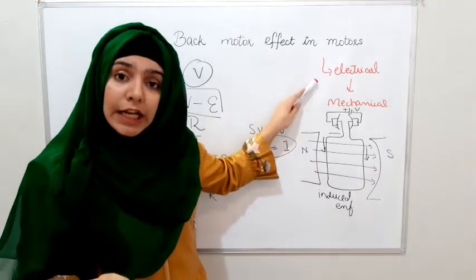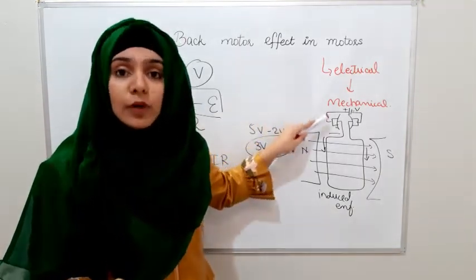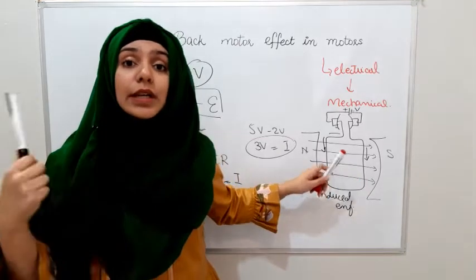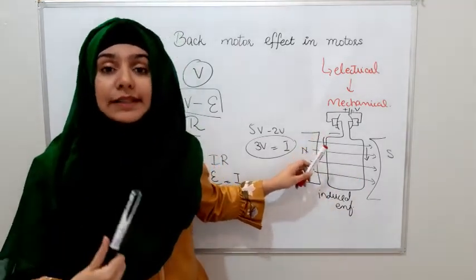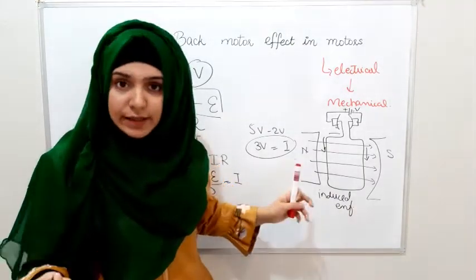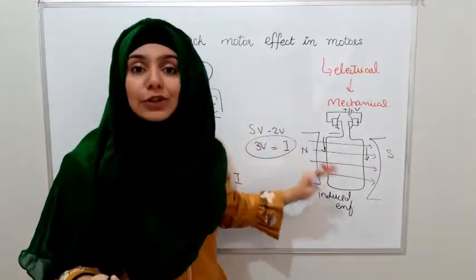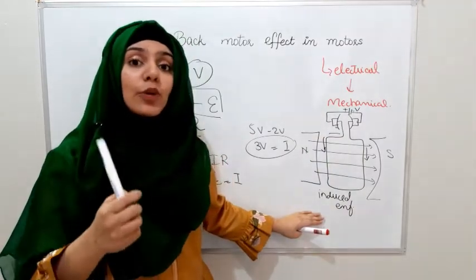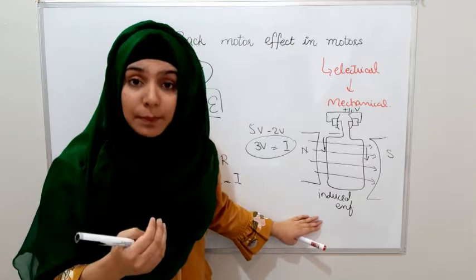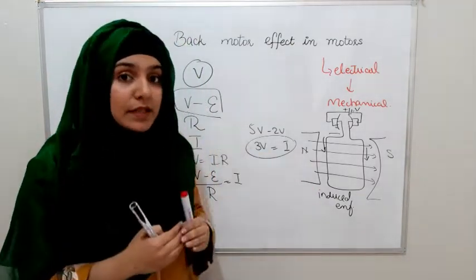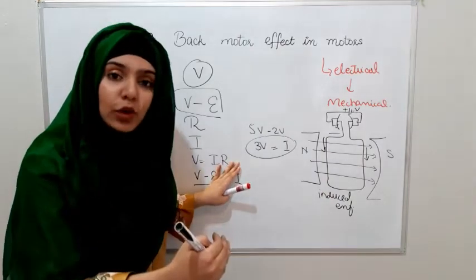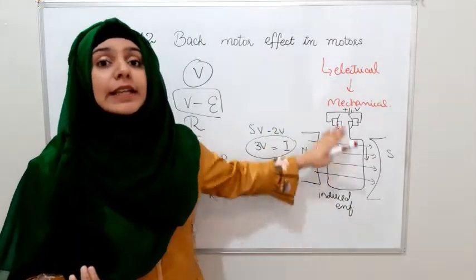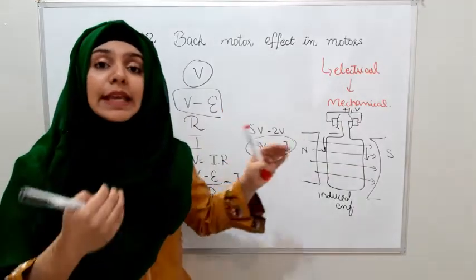If we don't have any induced EMF, then the magnetic field will rotate very quickly. When it rotates, so much current will be produced that our motor will burn. The back EMF reduces this burning effect. If too much current tries to pass, the induced EMF increases its value so that the current is limited. This means that the induced EMF opposes its cause, regulating the current according to requirements.